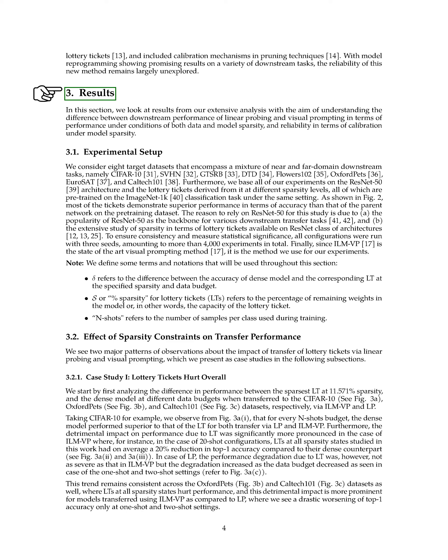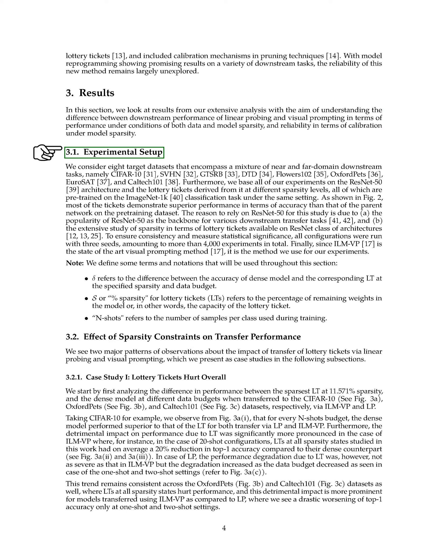In this section, we'll delve into the findings from our comprehensive study. Our goal is to understand how linear probing and visual prompting compare in terms of performance when faced with data and model scarcity, and how reliable they are when the model is sparse. We used eight different datasets covering a range of tasks, including CIFAR-10, SVHN, GTSRB, DTD, Flowers-102, Oxford Pets, Eurosat, and Caltech-101. All our experiments were based on the ResNet-50 architecture and its derived lottery tickets at various levels of sparsity, all pre-trained on the ImageNet-1K classification task.